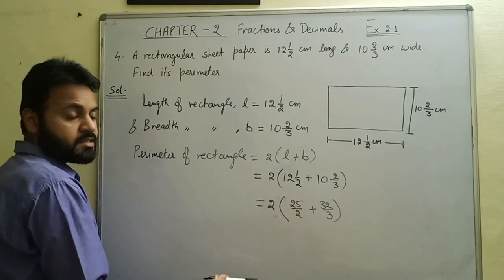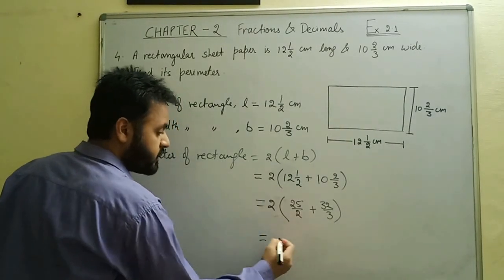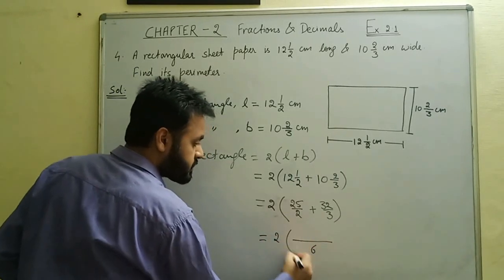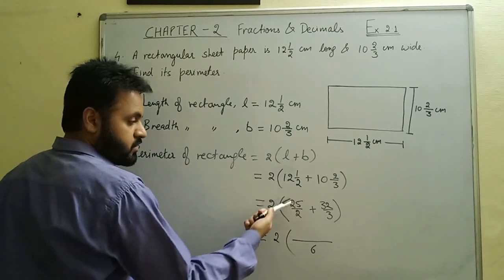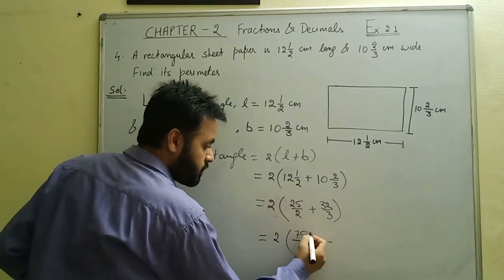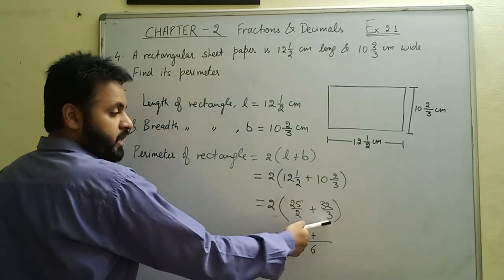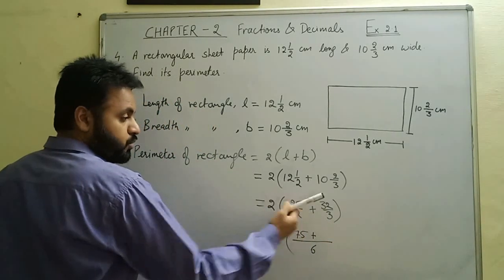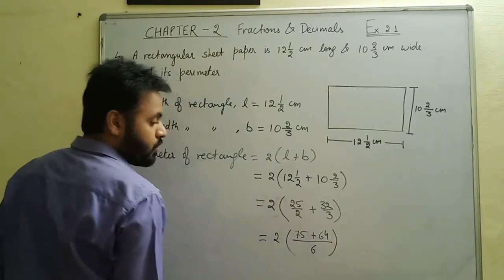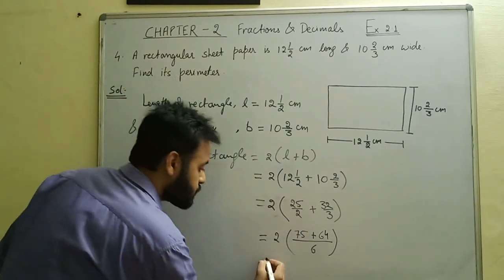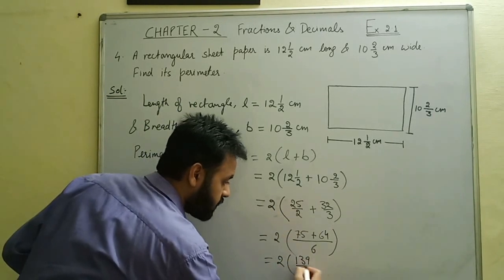These two are unlike fractions, so we take the LCM of 2 and 3, which is 6. When 6 is divided by 2 we get 3, and 3 × 25 = 75. The plus sign remains. When 6 is divided by 3 we get 2, and 2 × 32 = 64. Adding 75 and 64 gives 139, so we get 2 × (139/6).